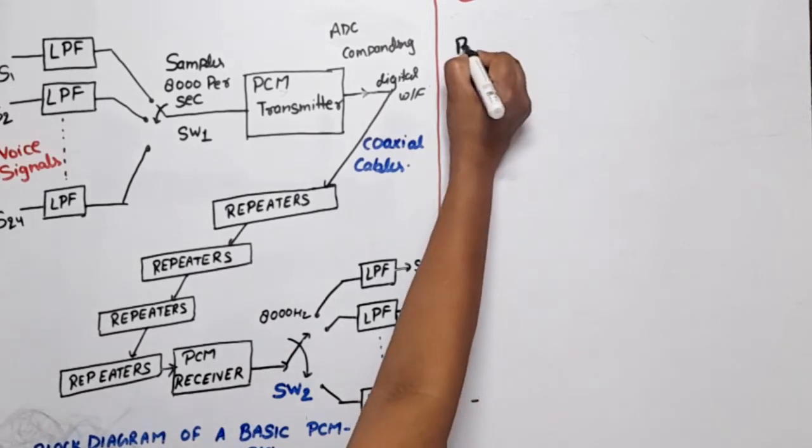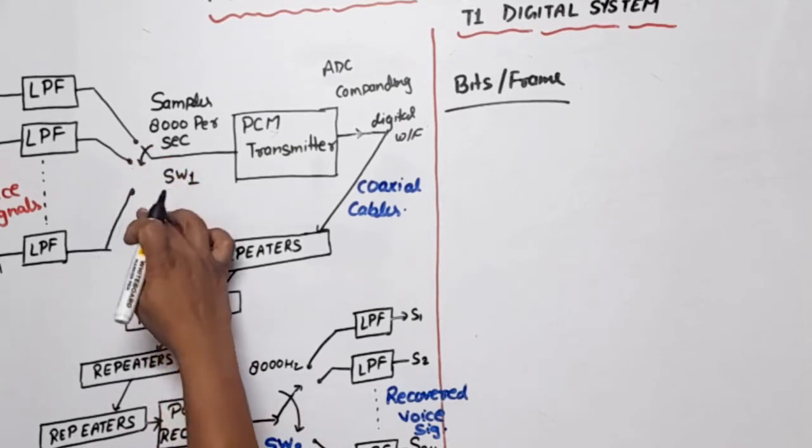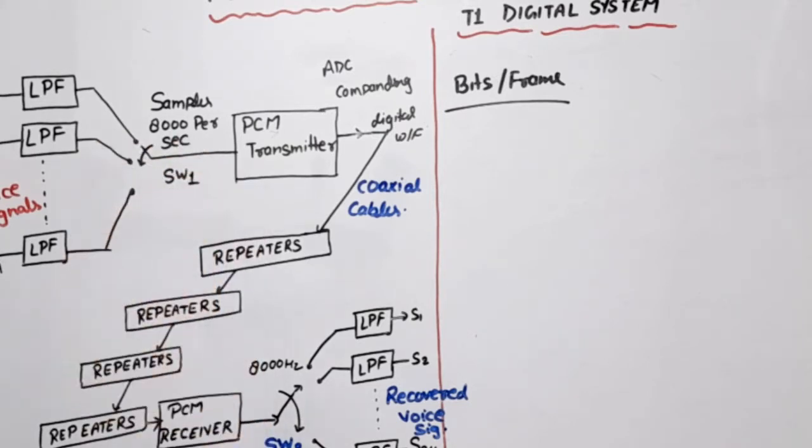First, let's see bits per frame. Per frame means when the commutator switch completes one rotation, how many bits are transmitted. The switch goes from S1 to S24, then comes back to S1.